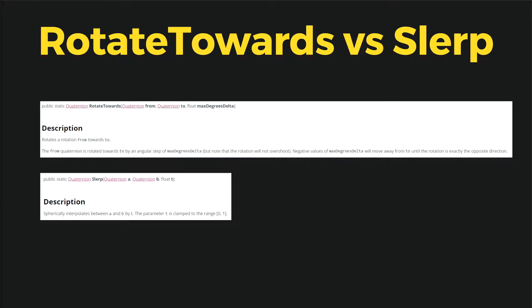Well, the difference is that the slerp offers us the way to do the rotation in a given time. We provide the percentage of the rotation as the last parameter. Imagine a guard tower that detects a player.